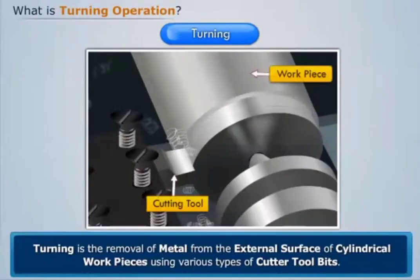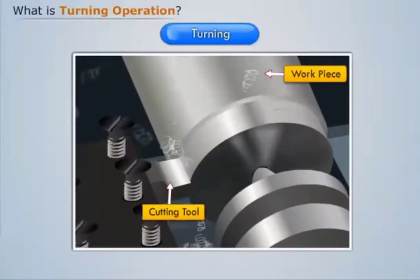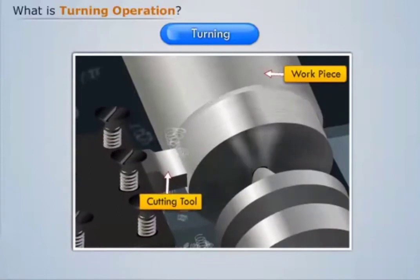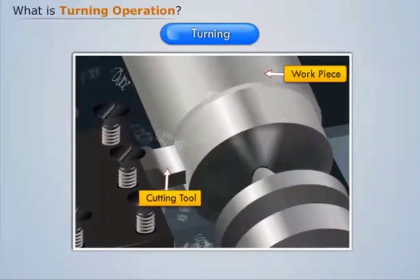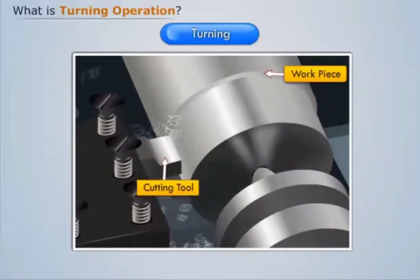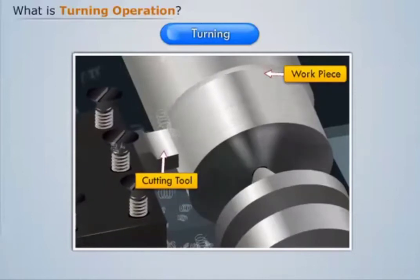Turning is the removal of metal from the external surface of a cylindrical workpiece using various types of cutter tool bits. The main characteristic of turning is that the workpiece rotates and the tool is kept in a rest position.